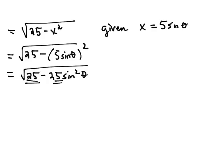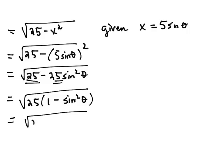Notice that both this term and this term have a 25, so we're going to factor that out, and that will leave us 1 minus the sine squared of theta, and 1 minus the sine squared of theta is the cosine squared of theta.